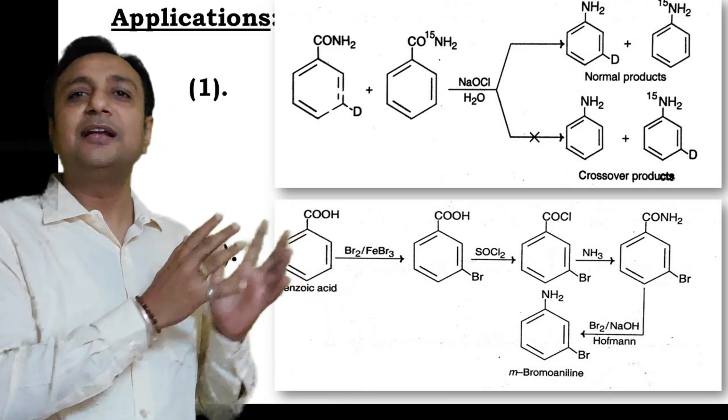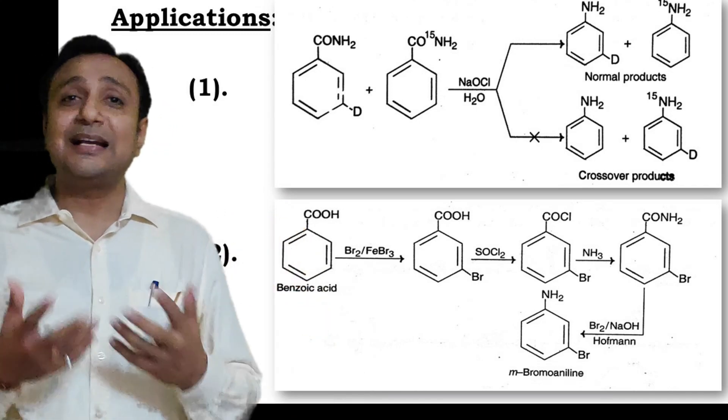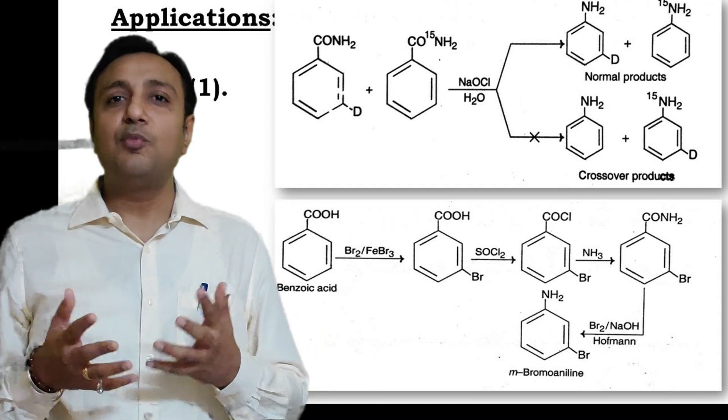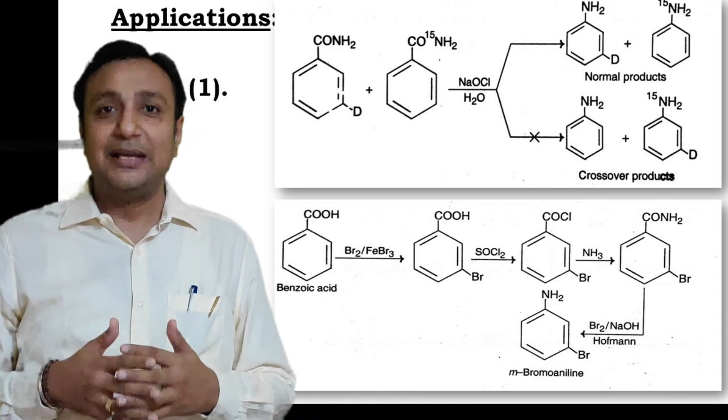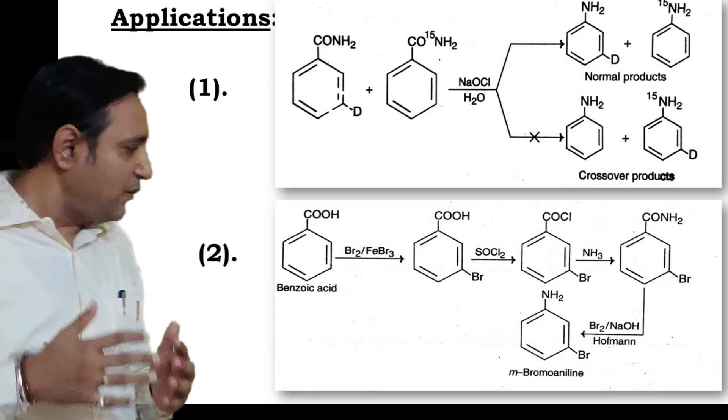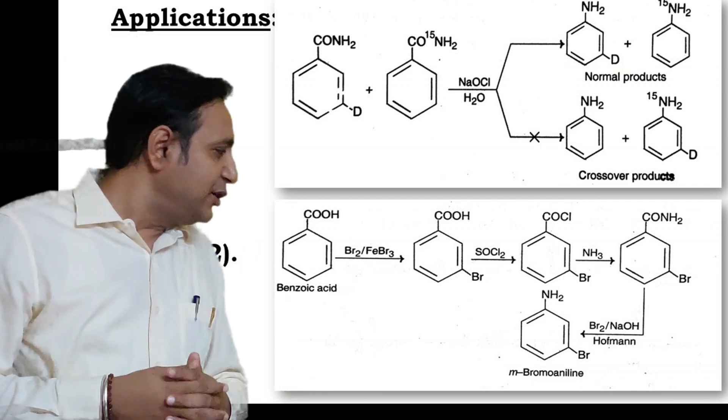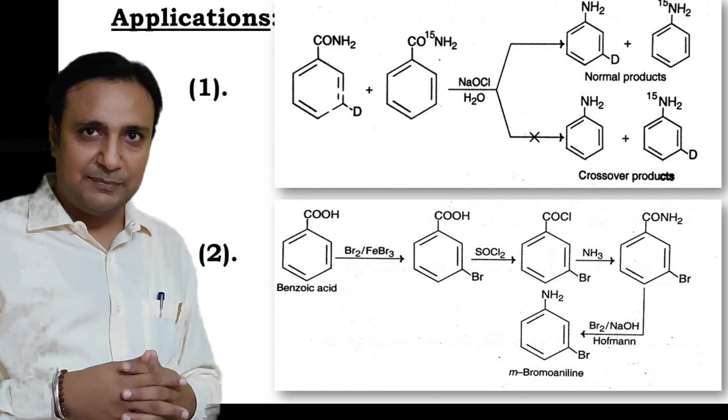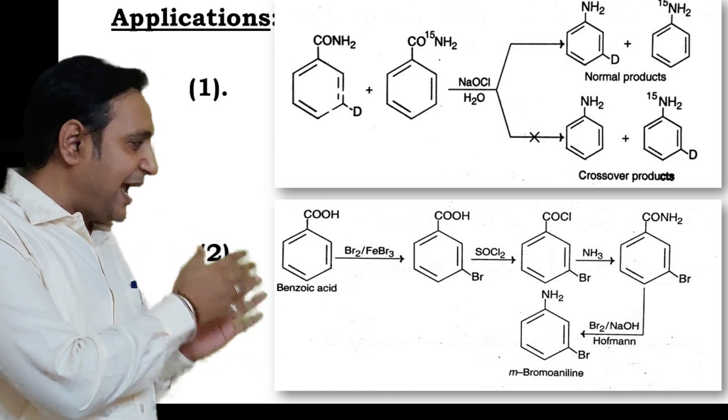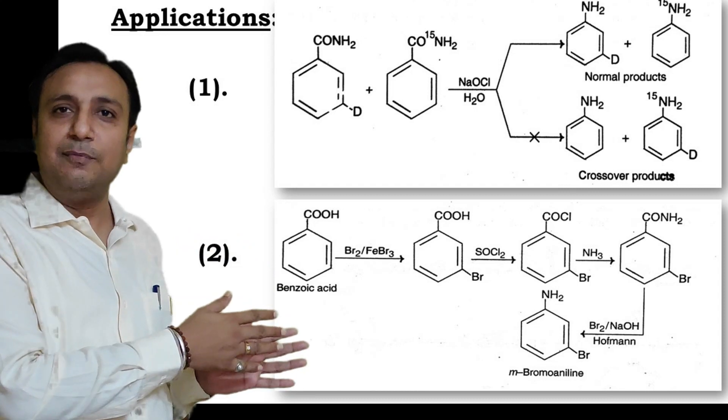In the second application, meta-bromo aniline can be obtained from benzoic acid. In this reaction, first benzoic acid undergoes bromination to produce meta-bromo benzoic acid, which on reaction with thionyl chloride produces meta-bromo benzoyl chloride.